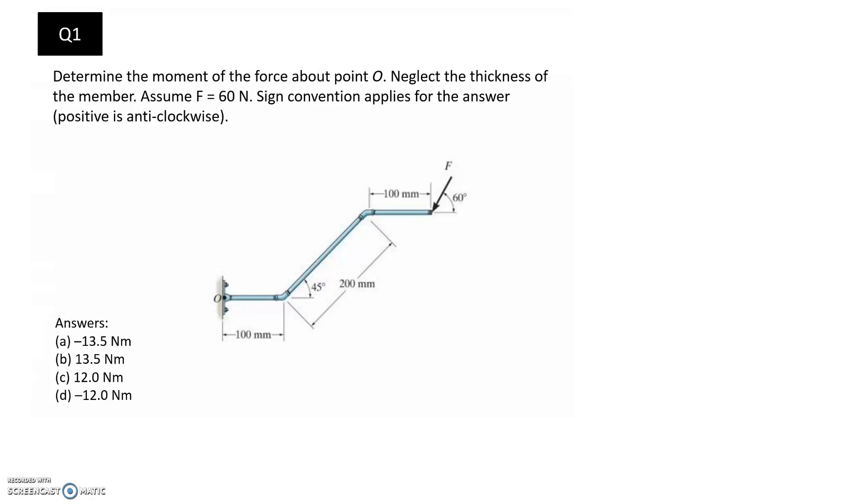We're asked to determine the moment of the force about point O, which is this one down the bottom here. We can neglect the thickness of the member. We're told to assume that the force applied is 60 newtons, so that's this one here. And we're using a sign convention to give the final answer. So these are the different options to choose from, and anti-clockwise is going to be the positive direction for those.